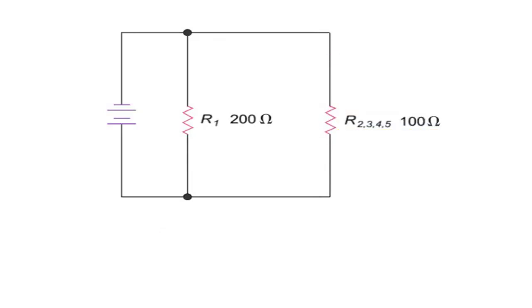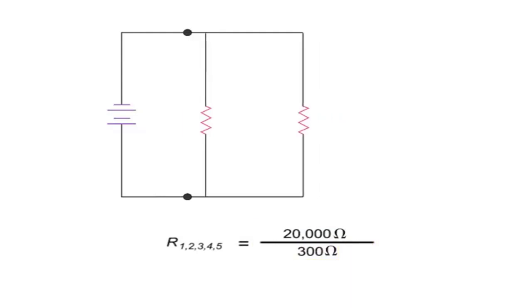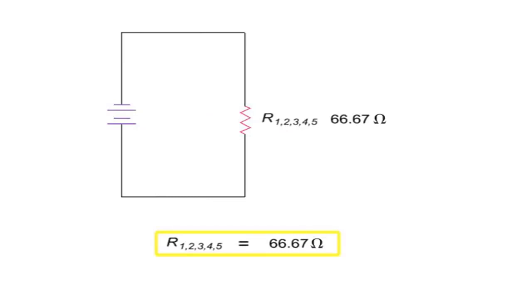And finally, we are left with two resistance values in parallel, the R1 resistance of 200 ohms, and the equivalent value of 100 ohms for resistors 2, 3, 4, and 5. Again, using the product over sum equation, we can determine the combined resistance. Multiplying 200 times 100 gives 20,000 divided by 200 plus 100, which is 300, resulting in an overall circuit resistance value of 66.67 ohms.